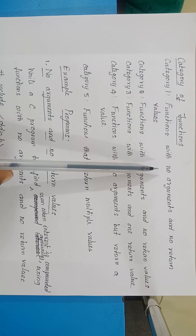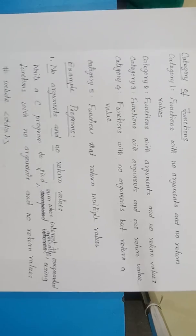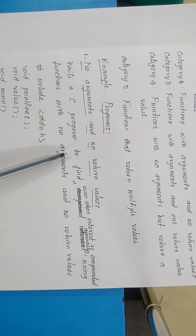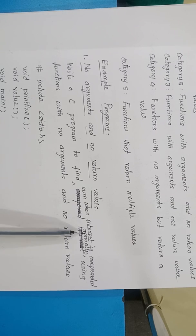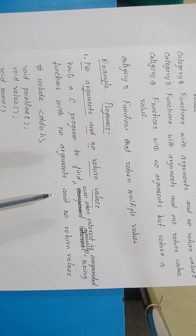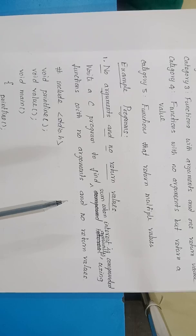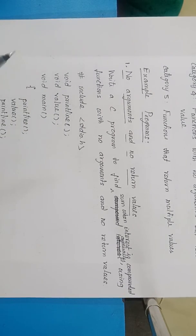Let me explain the program for category 1, that is with no arguments and no return values. The program is: we are going to find the amount received when the interest is compounded annually. That is, we are going to calculate the amount received due to applying compound interest. Here, we are going to declare functions with no arguments and no return values.